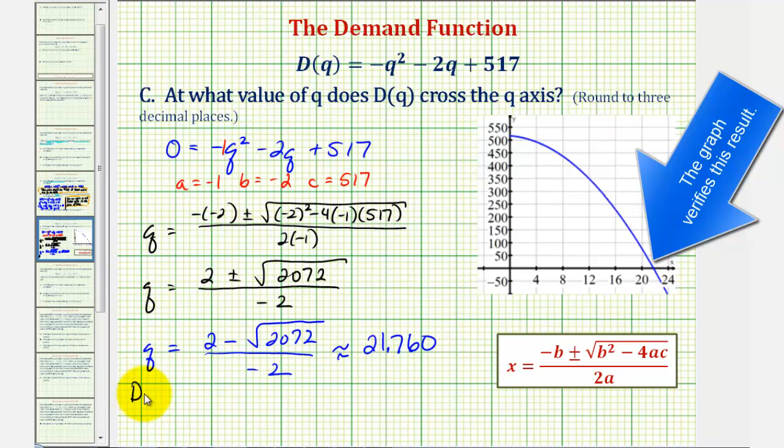So D of Q crosses the Q axis at about 21.760.